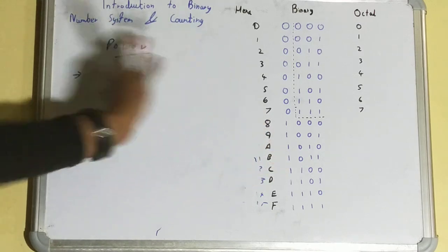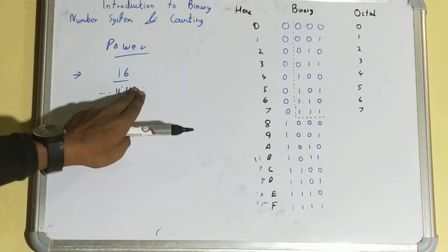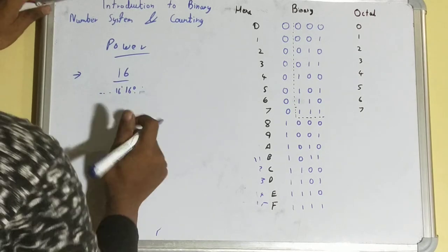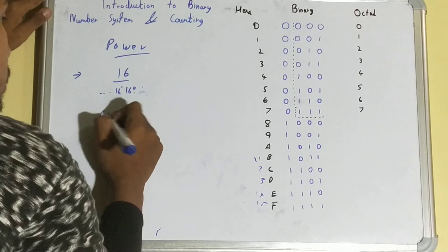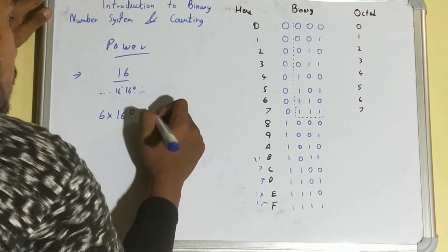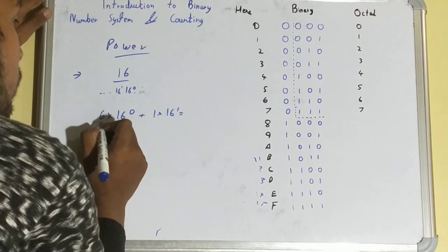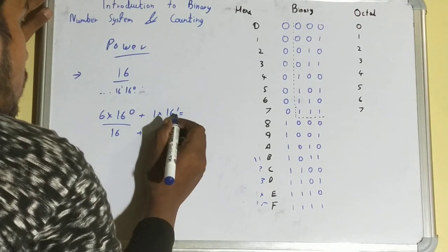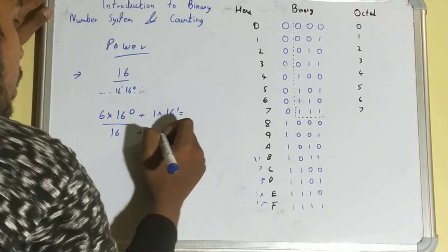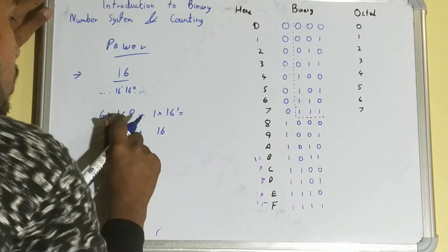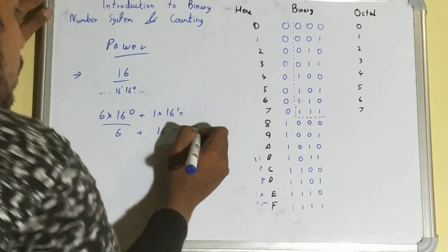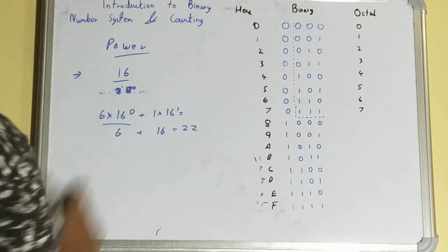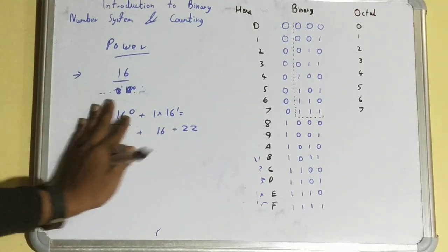To find the decimal equivalent: multiply each digit by its corresponding power of the base and sum them. So 6 × 16⁰ + 1 × 16¹ = 6 × 1 + 1 × 16 = 6 + 16 = 22. This confirms our earlier result. The same method applies for octal — just replace 16 with 8 and multiply accordingly.